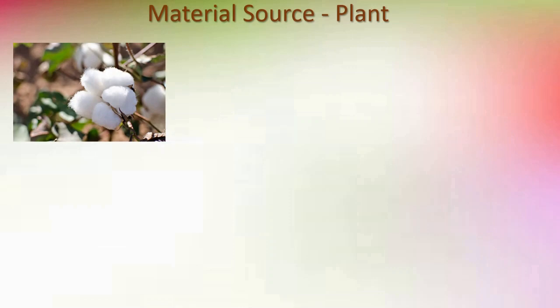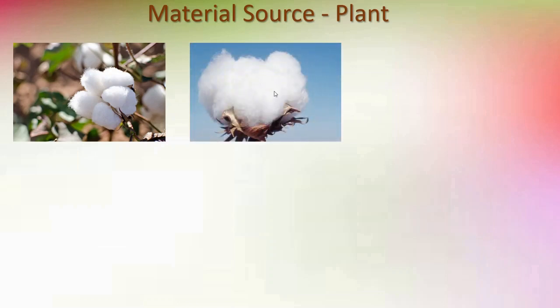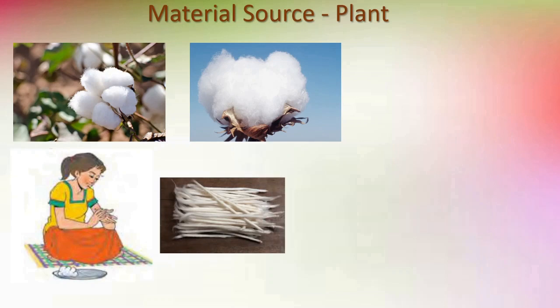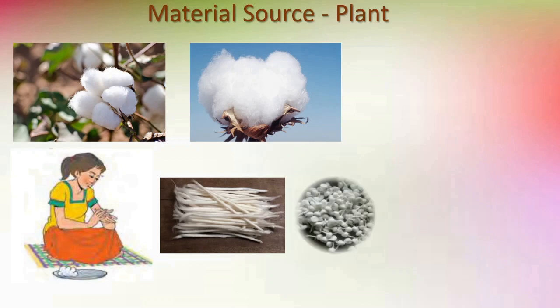Here you can see a cotton plant. This is a cotton plant and this is called a cotton ball. Here you can see a girl using a cotton pad. She is stretching that cotton pad until it gets stretched, then she presses and rolls it. When we do this action, we get wicks — long wicks — which we use to light lamps.